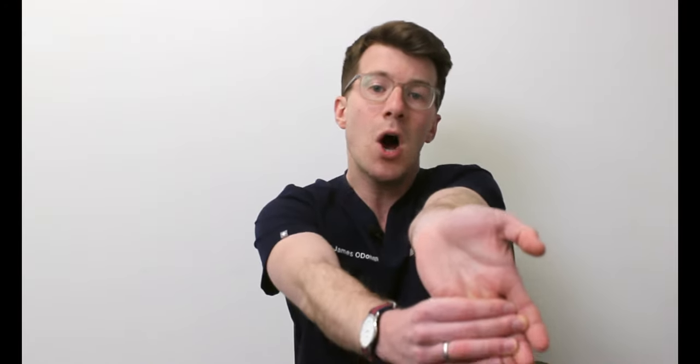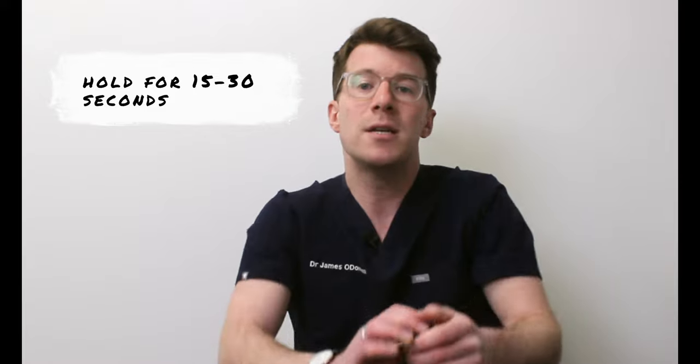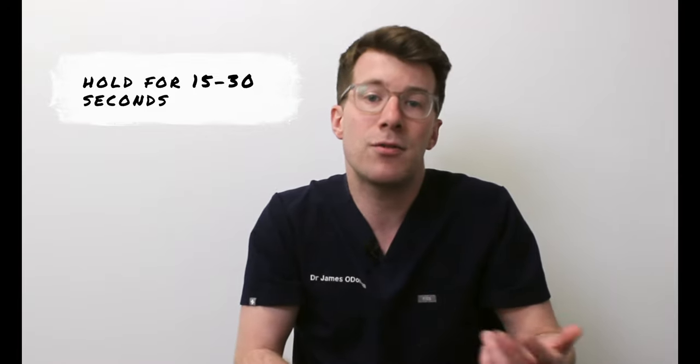To do this, first extend your arm out in front of you with the palm facing upwards. Next, you want to bend your wrist back and point the hand towards the floor. With the other hand, gently bend the wrist further back until you feel a stretch, usually in the forearm here. You want to hold this stretch for about 15 to 30 seconds and repeat it three or four times.